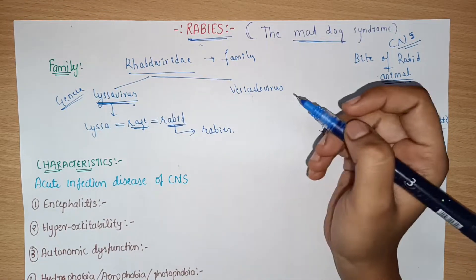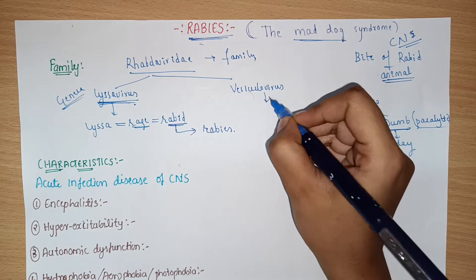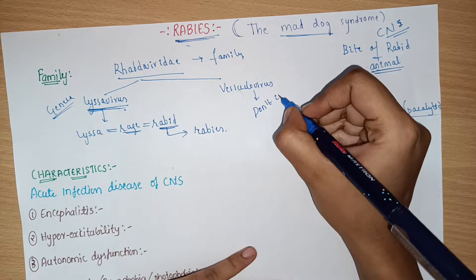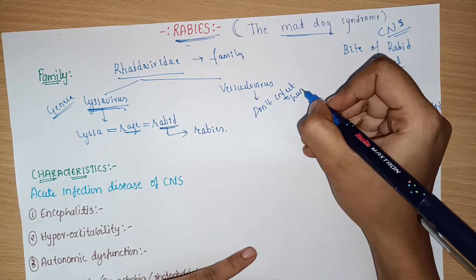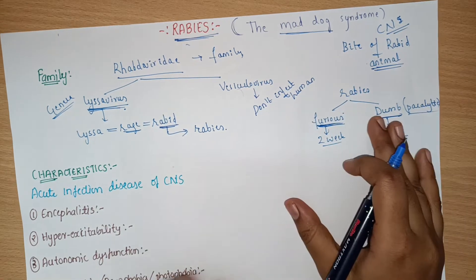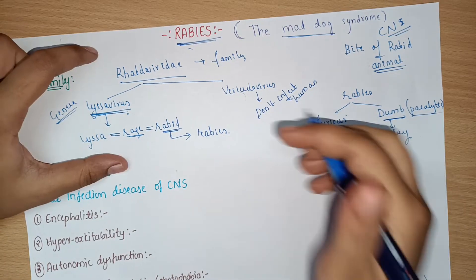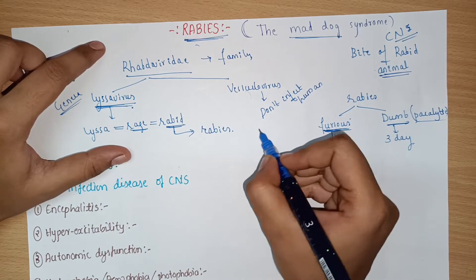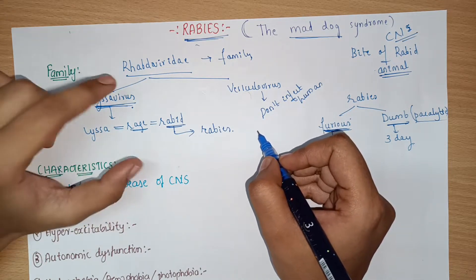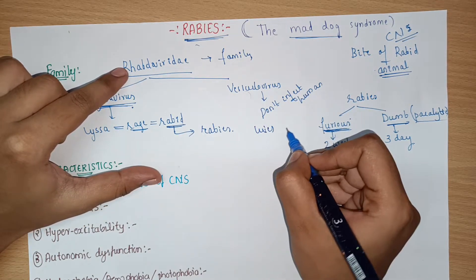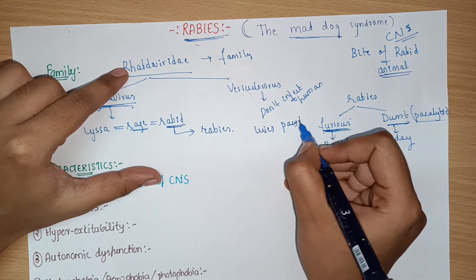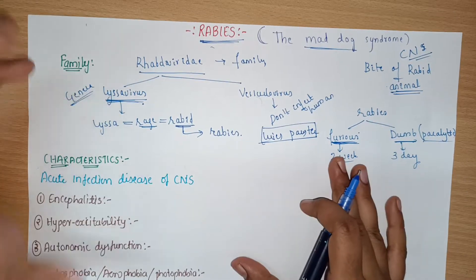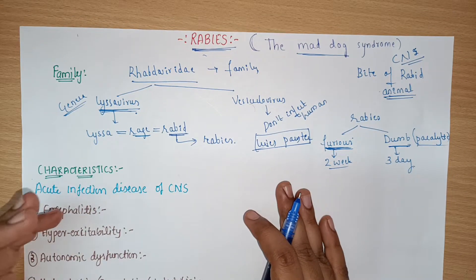The other genus, Vesiculovirus, does not affect humans. Louis Pasteur was the one who first established the term rabies. Now we will look into the general symptoms of a person affected with rabies.